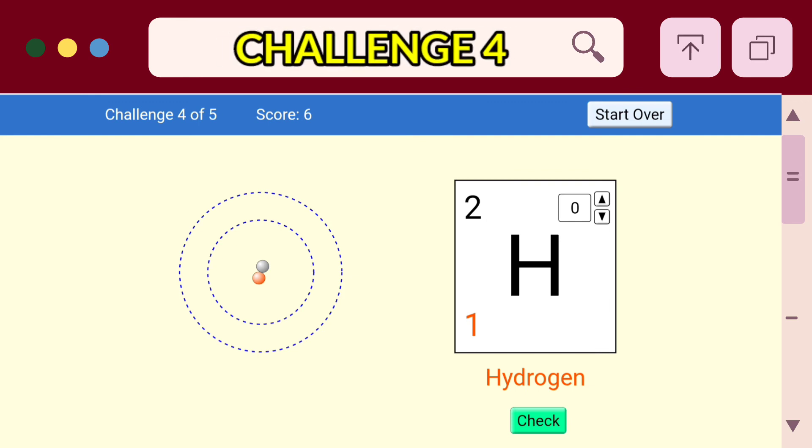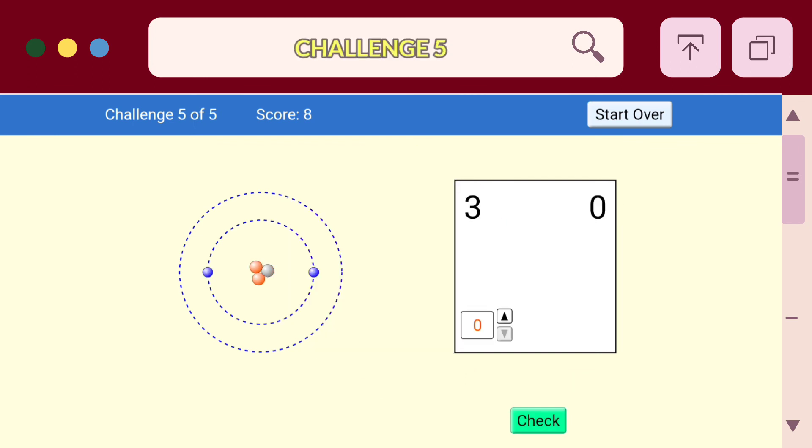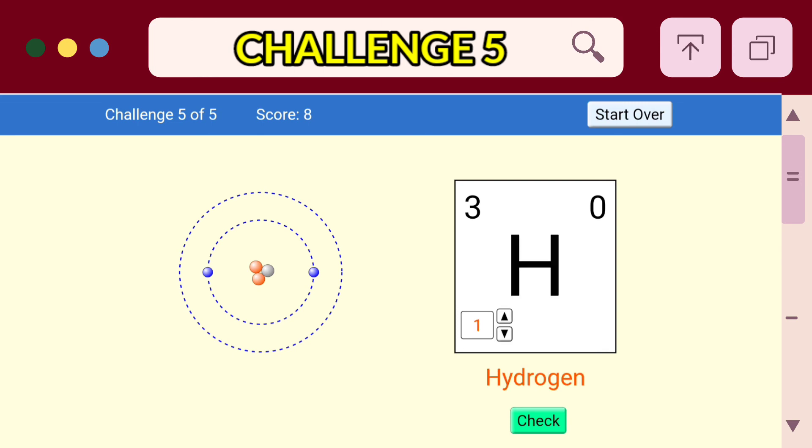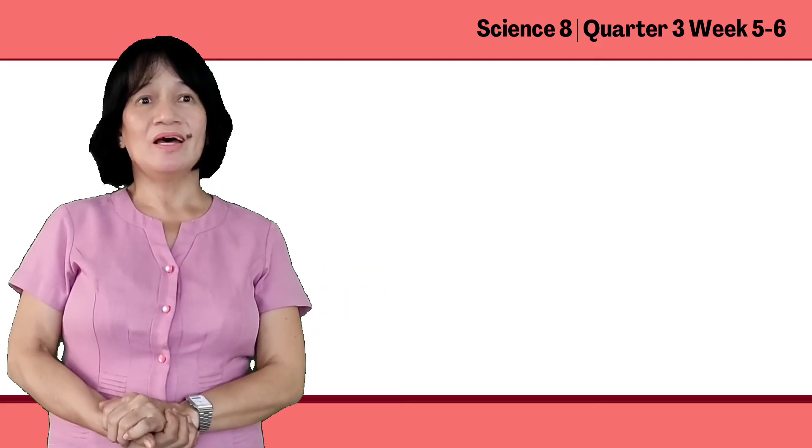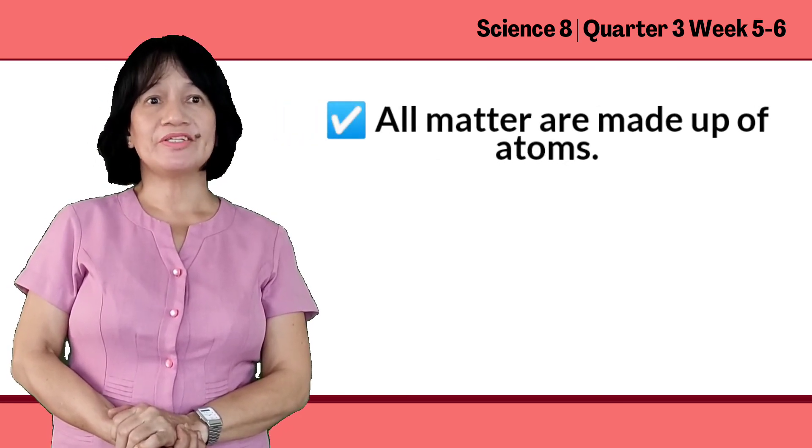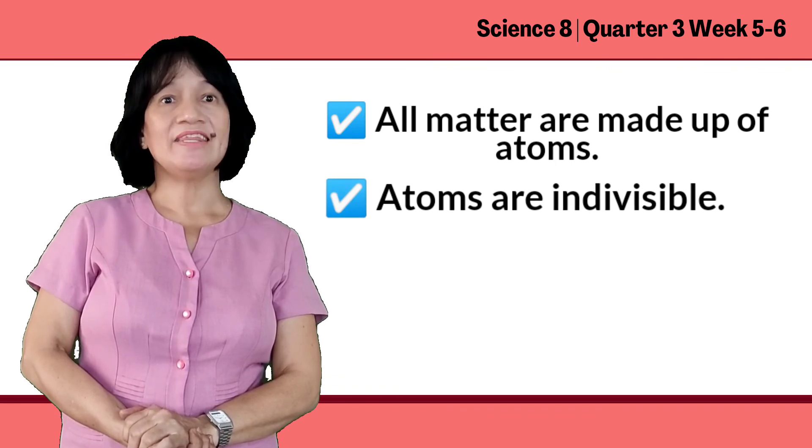Challenge number four, what is the net charge of the atom of this element hydrogen? Very good. The answer is positive one. And the last one, challenge number five, what is the atomic number of the atom of this element helium? Excellent. The answer is two.